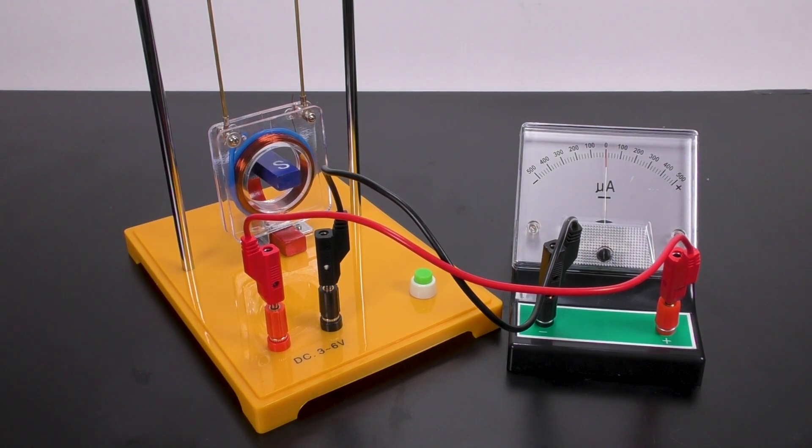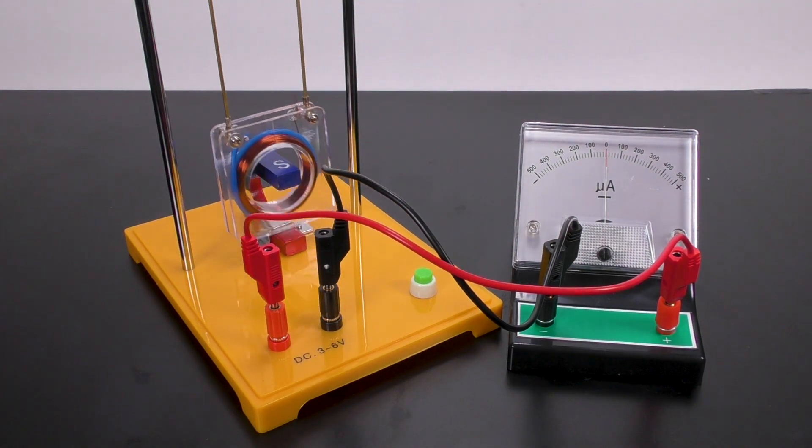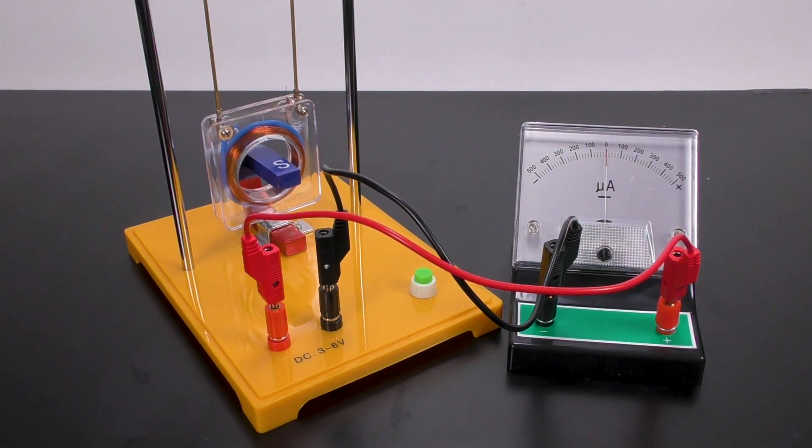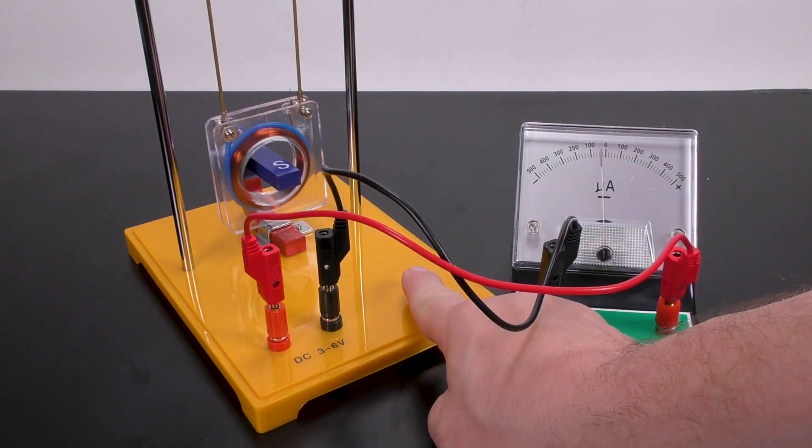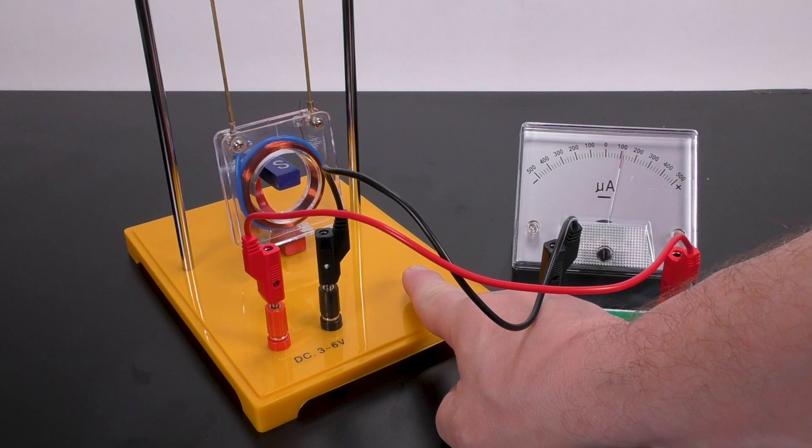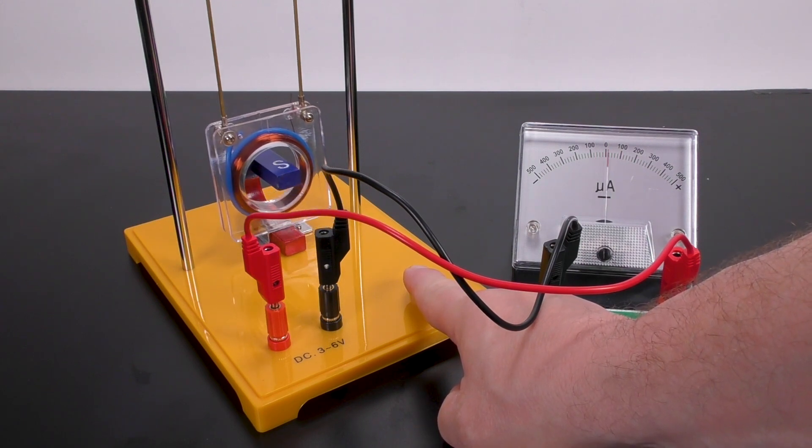For this activity, I am going to provide the motion by swinging the coil and show how electricity is being produced. I will start the coil swinging and press the button. As the coil moves through the external magnetic field, a current is induced in the wire, creating electricity.